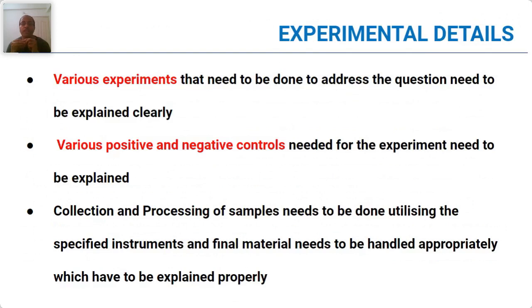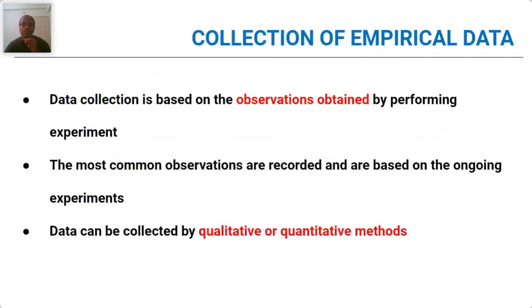In the experimental details section, you give the details of exactly how you did the experiment and how you went about with it. You have to explain what are the positive controls and negative controls needed for the experiment. Collection and processing of samples need to be done utilizing specified instruments. What are the handling procedures? How you operated the instrument? In some cases you have to mention it in detail, only then the reader can appreciate what exactly you have done. Data collection is as equally important as how you write the thesis — how you collected observations, whether it was in an excel sheet or otherwise, and whether data is qualitative or quantitative.